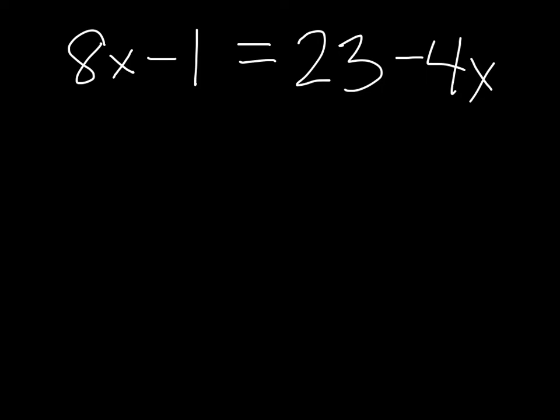So the first thing that we have to do is distribute and combine like terms, which we don't have any to combine because we have variables on either side. So now we need to get our variables only on one side. So I'm going to eliminate my smaller variable, the variable that I have less of. And negative 4 has a lesser value than positive 8. So I'm going to get rid of my 4 negative x's.